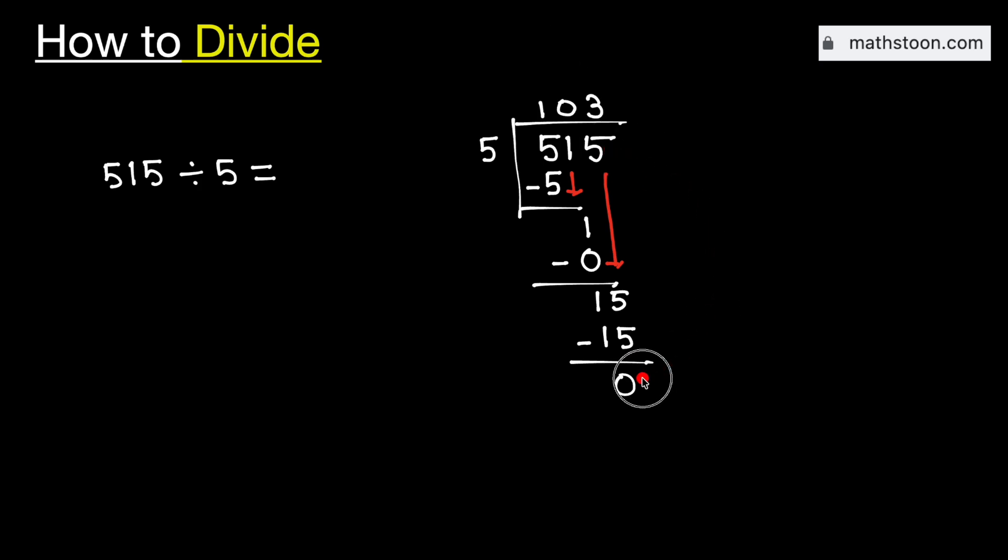As we have no number to bring down here and got the number 0, so we will stop. Therefore, 515 divided by 5 is equal to 103. And this is our final answer.